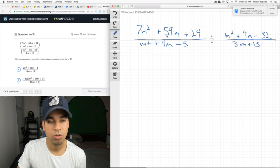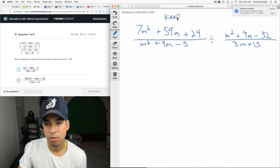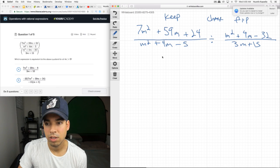The key here is to make sure that I'm not making any mistakes with what I write down. Look how I'm going to be very careful and check. 7m squared plus 59m plus 24 over m squared plus 4m minus 5. Yep. M squared plus 4m minus 32. 3m plus 15. Perfect. Now, we're going to do keep, change, flip. This is what we do when we're dividing fractions. We really turn it into a multiplication problem.